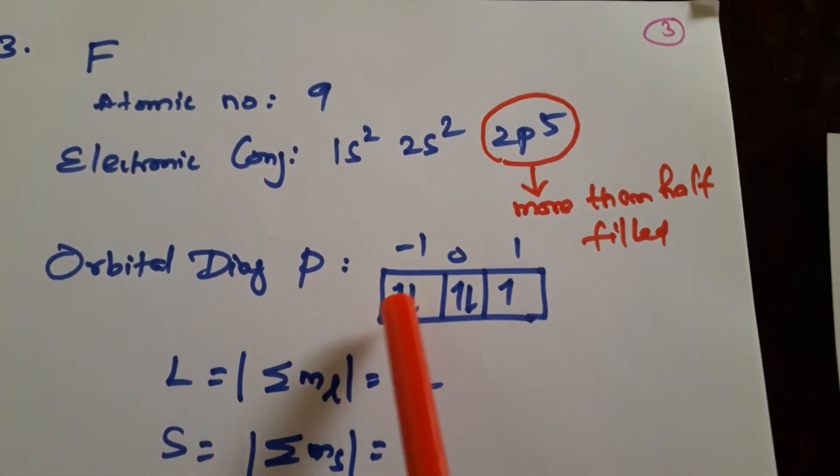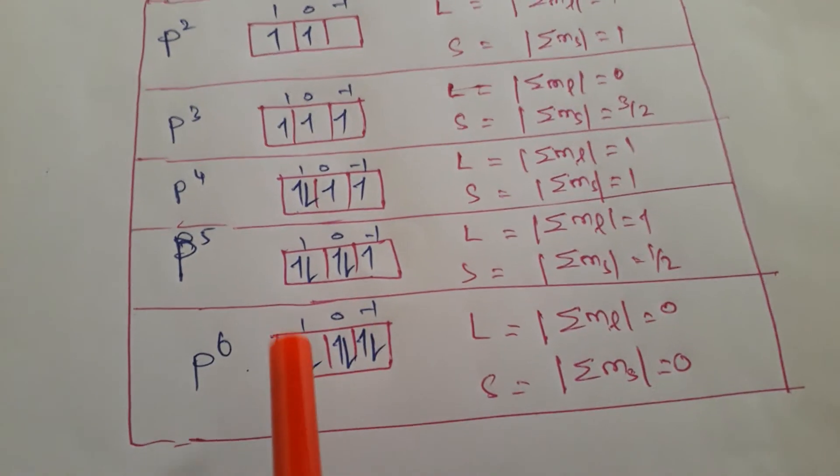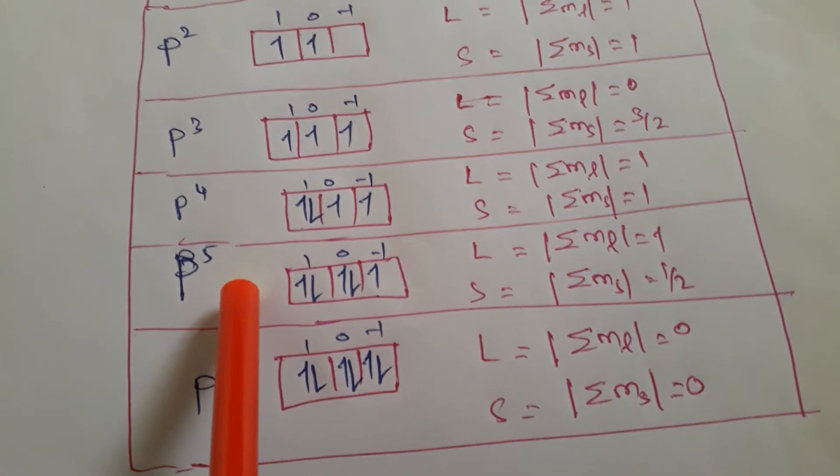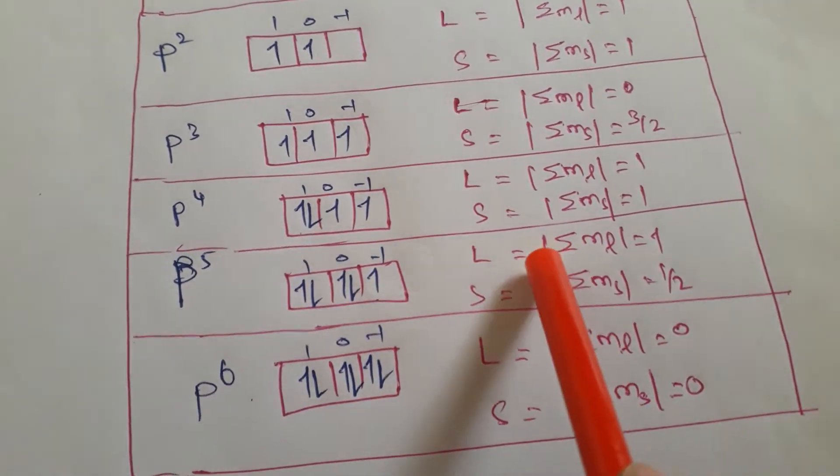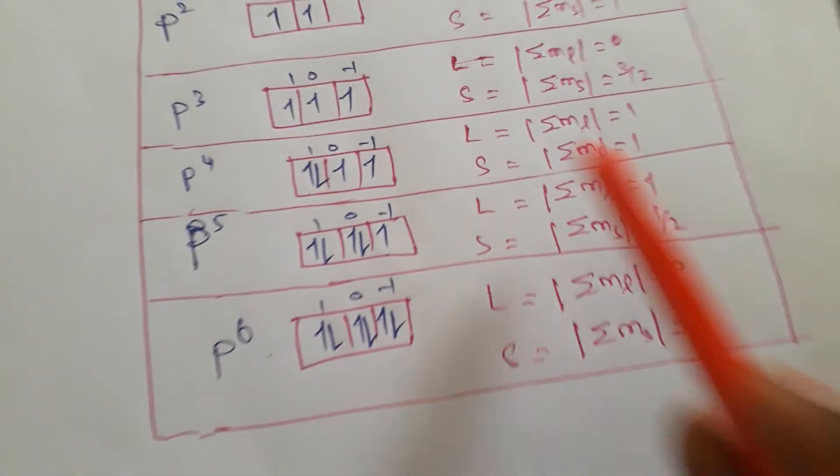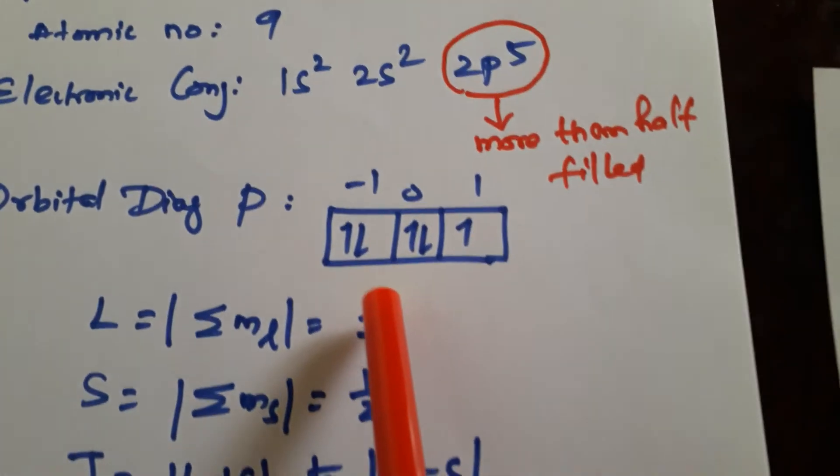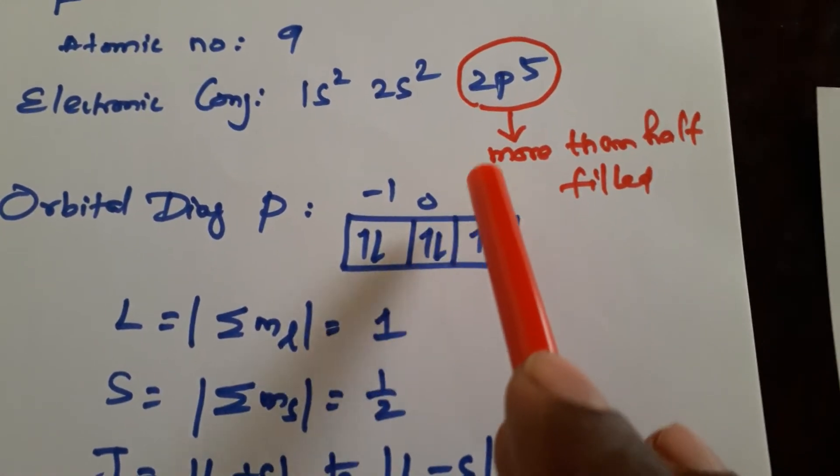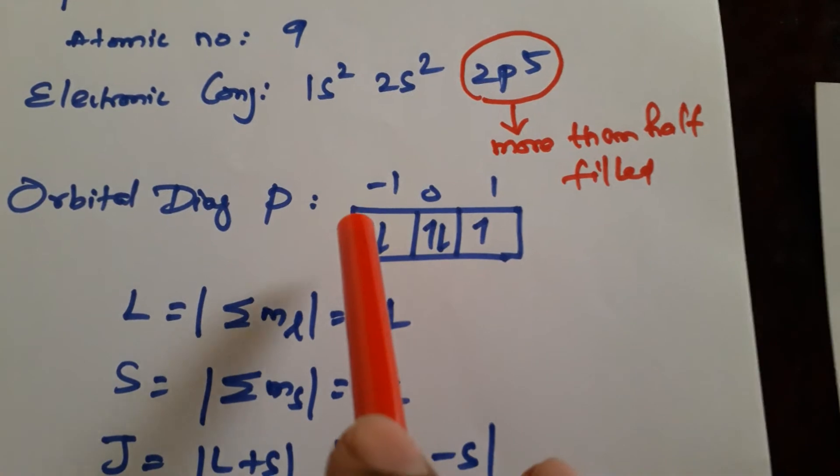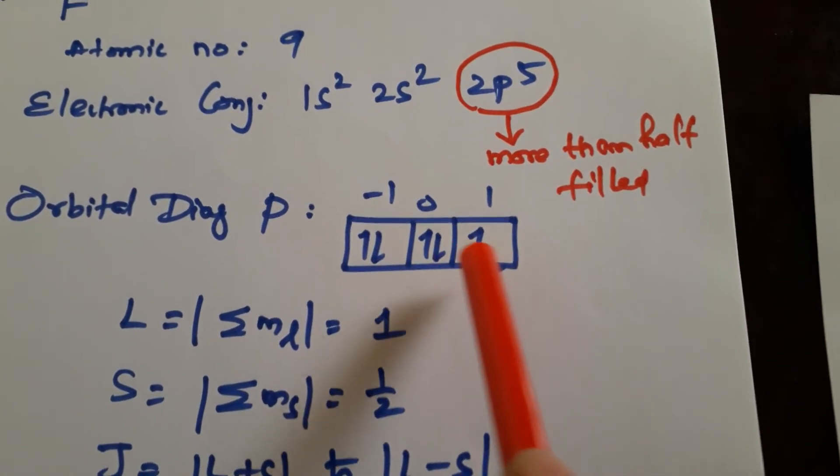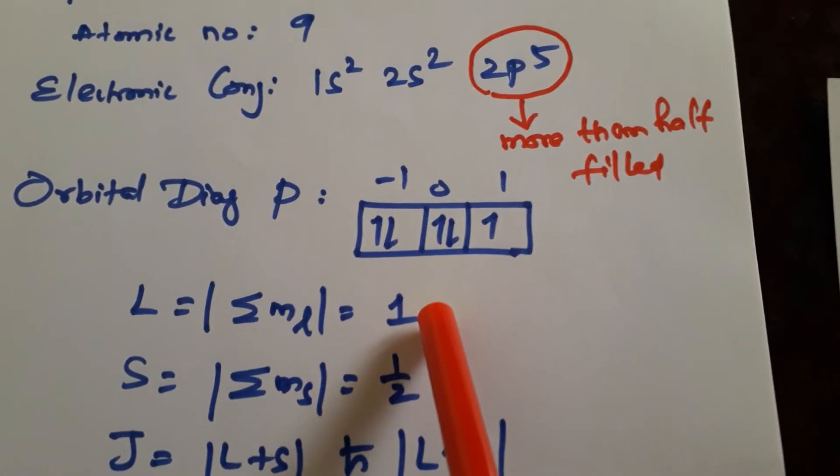And notice this. And we know it, for p5 we know this one. Right. In our previous video we saw that p5 means this. L value is 1, S value is 1/2. So from it we are getting 1. This is the L value, 1. S value is, this is 0, this is 0, this is half. So L value is 1, S value is 1/2.